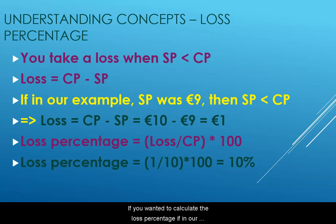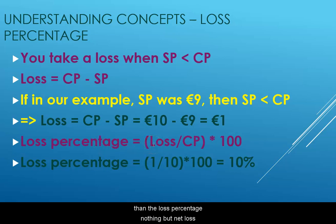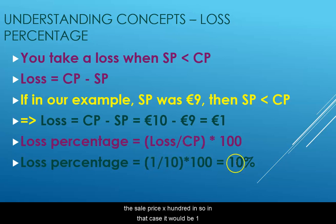If you want to calculate the loss percentage — in our example where the sale price was nine euros — the loss percentage is loss divided by the cost price, times one hundred. In that case it would be one divided by ten times one hundred, which is ten percent.